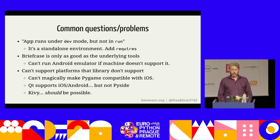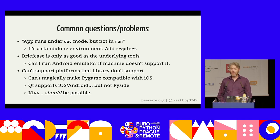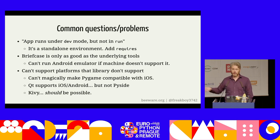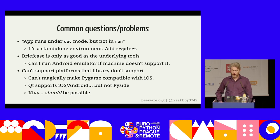The single most common question in the Briefcase support channel: my app runs fine under dev mode but doesn't under run. This is because your dev app runs in your local virtual environment, while run is a standalone environment. If you have manually pip-installed something locally in your virtual environment, it will not be available to your packaged app. You need to add an explicit declaration of that requirement in the requires list of your app, then call `update -r` to make sure it's installed into your packaged app. Briefcase is also only as good as its underlying tools — Android emulation and Docker have very specific hardware requirements.